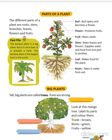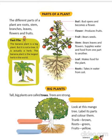Let's learn about different parts of a plant. This is a bud — a bud opens and becomes a flower. This is a flower; a flower produces fruits. This is a fruit. Have you seen fruits? Fruits have seeds — fruits have many seeds. This is a leaf; a leaf is used for making food for the plant.